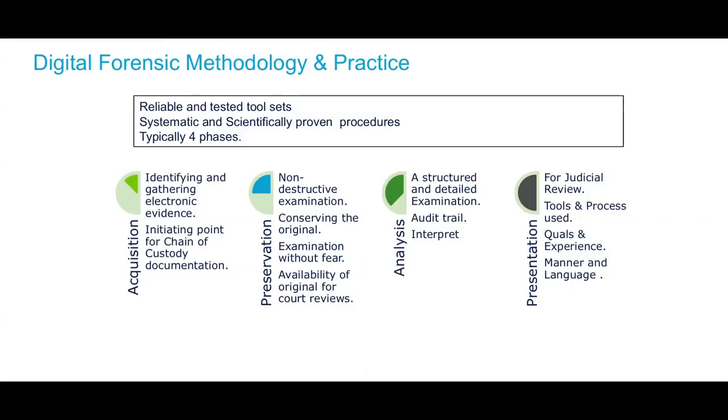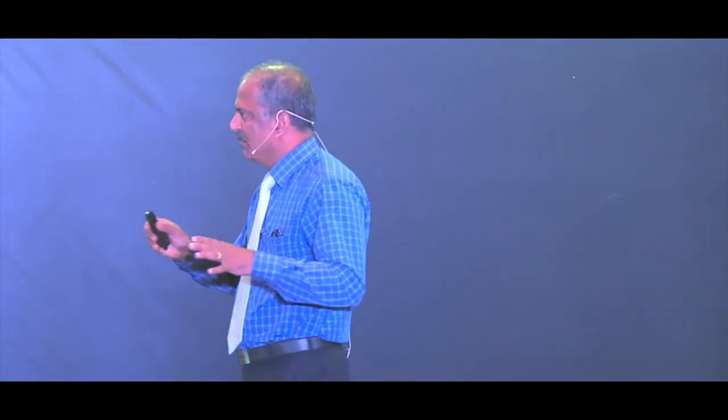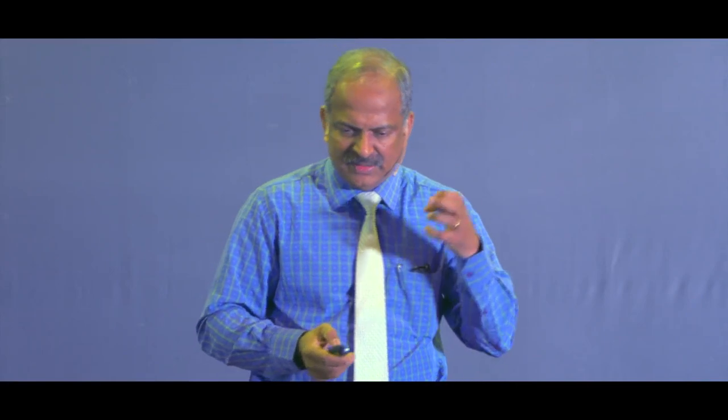Today the forensic procedures use very reliable and systematic tool sets and procedures. The whole process is covered into acquisition, preservation, analysis, and presentation — the four different phases in forensic analysis. When you say acquisition, you identify what evidence is available, where it is lying, and try to acquire that container. In all investigations there is a thing called chain of custody — the investigating agency documents the collection, and that document tracks the movement of evidence from the location of collection until it is presented in a court of law, ensuring no one is tampering with it.